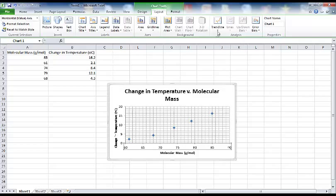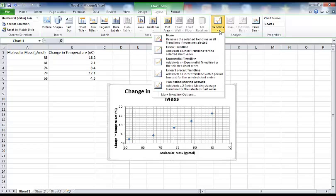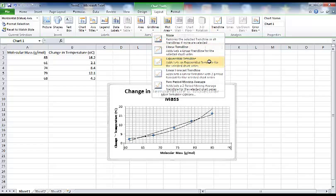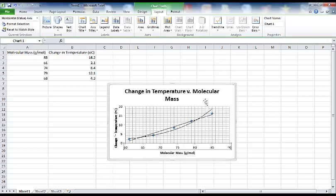Additionally, yesterday we added a trend line. And our options are a linear trend line or an exponential trend line. So we'll try linear to see how that looks. It looks like it's a pretty good fit. But we also have the exponential, which also seems like it's a reasonable fit. So which of those two lines is better?